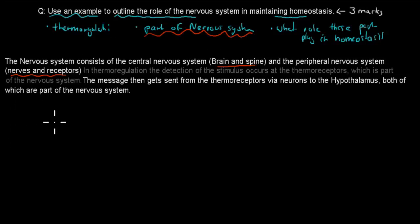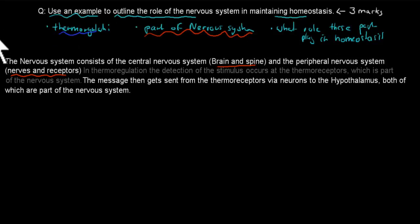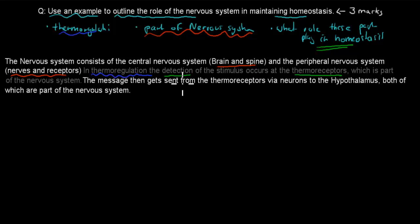Then I've gone into the example — thermoregulation. In thermoregulation, the detection of the stimulus occurs at the thermoreceptors, which are part of the nervous system. The message then gets sent from the thermoreceptors via neurons to the hypothalamus, both of which are also part of the nervous system. So I've given the example and covered what role these parts play in homeostasis — specifically, detection.